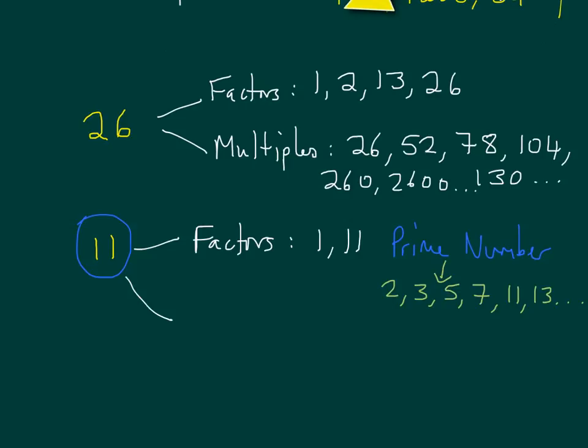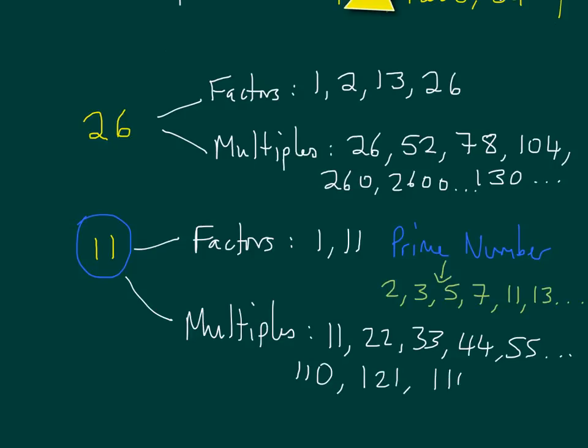And the multiples of 11, well, these are the numbers in the 11 times table. So 11, 22, 33, this is easy, isn't it? 44, 55, dot, dot, dot. And the same, you could have had any number in the 11 times table. So say, 110, 121, 1100, as long as it's in the 11 times table. Okay, that's factors, multiples, and prime numbers. Make sure you know which is which.